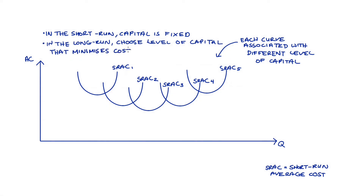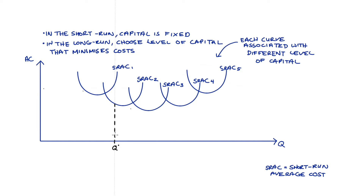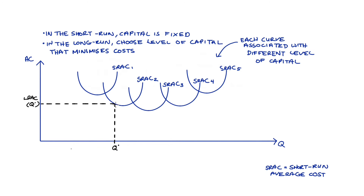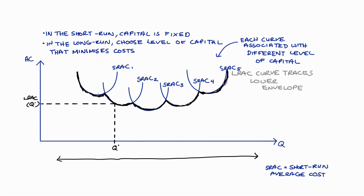In the long run, the firm can choose whichever level of capital that they wish. The determining factor in this decision is the level of capital that minimises the cost of production. So to find the long-run average cost associated with producing any amount — let's say Q star — we trace a line up, and the first curve that we hit corresponds to the cheapest possible way available to the firm of producing Q star. That level will be the long-run average cost for producing Q star. If we do the same exercise for all possible quantities, we essentially trace out the lower parts of our short-run average cost curves — hence the idea of the long-run average cost curve as being the lower envelope of our short-run average cost curves.